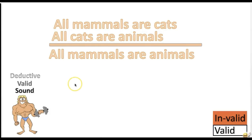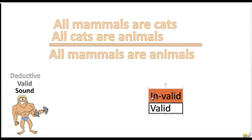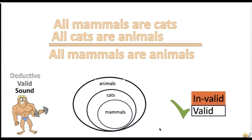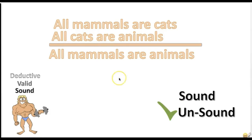Here's another practice problem: 'All mammals are cats. All cats are animals. Therefore, all mammals are animals.' Is this argument valid or invalid? It's valid — the conclusion follows necessarily from the premises. Is this argument sound or unsound? The argument is unsound, because the first premise is false: not all mammals are cats.